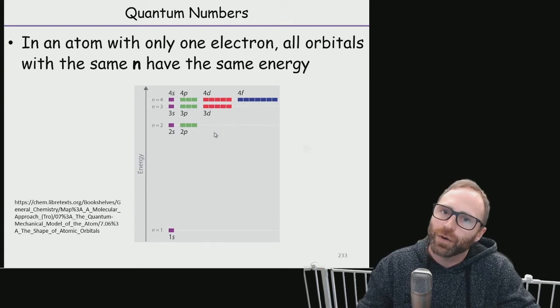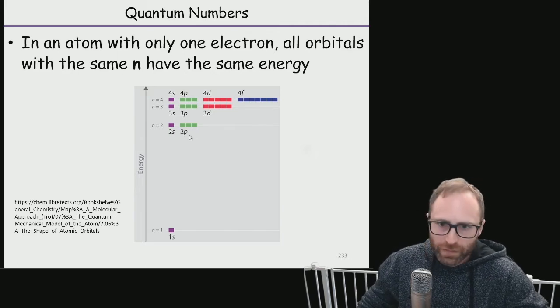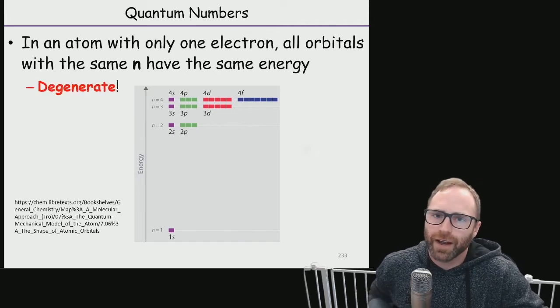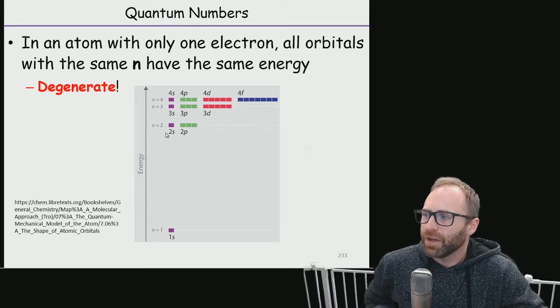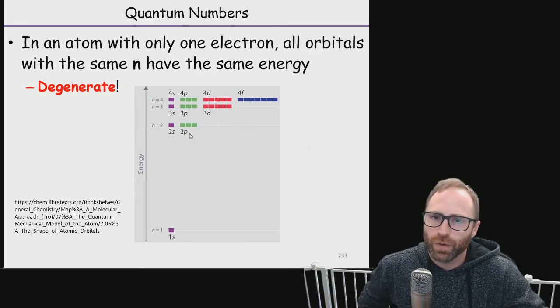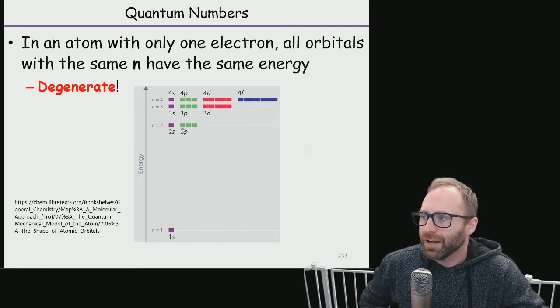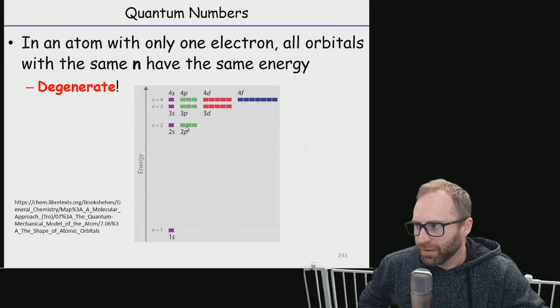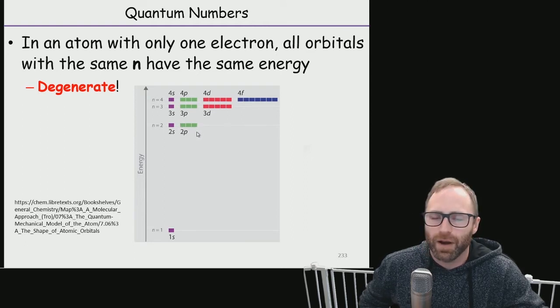There's a term that we use for that, and we call it degeneracy. We would say that these orbitals, the two s and the two p orbitals, are degenerate. Now we've got three individual two p orbitals within that two p subshell, so this one box, two box, three box—all three of these are degenerate with each other as well.